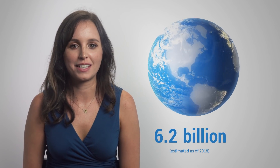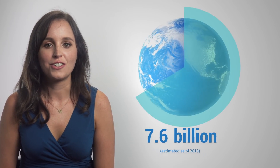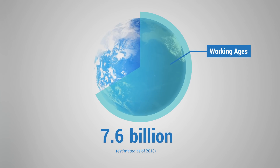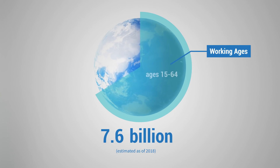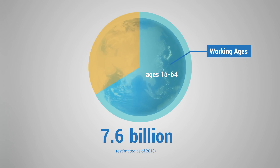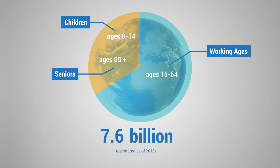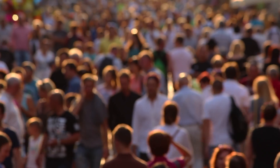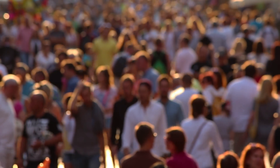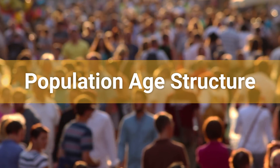There are 7.6 billion people in the world today. Two-thirds are in the working ages, usually defined as those between ages 15 and 64. Children ages 0 to 14 and those ages 65 and older make up one-third. But the share of the population in each age group, referred to as the population age structure, is changing.